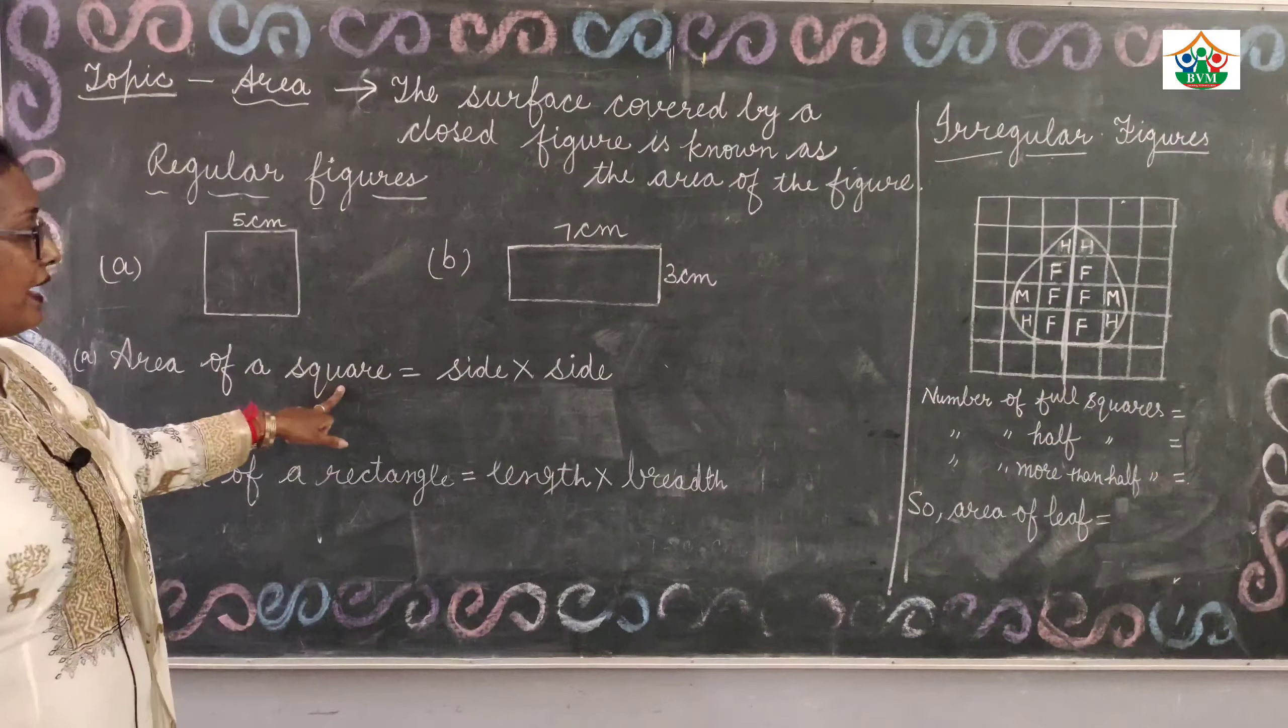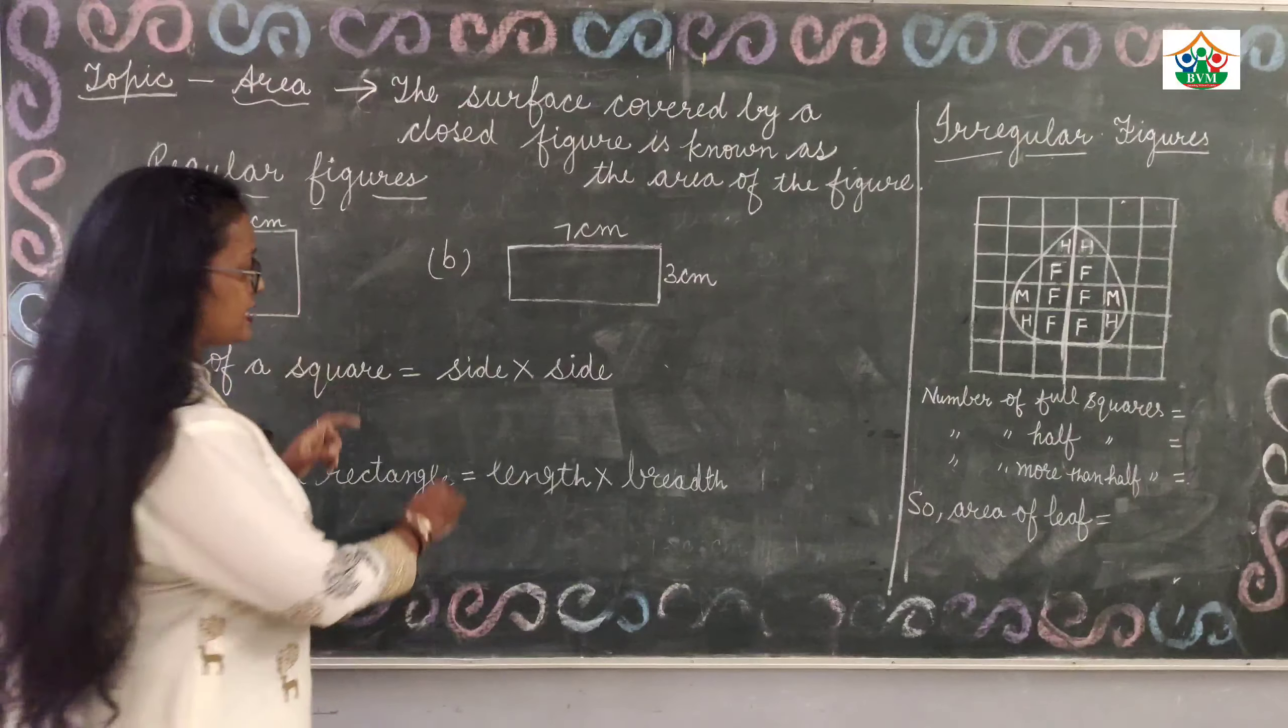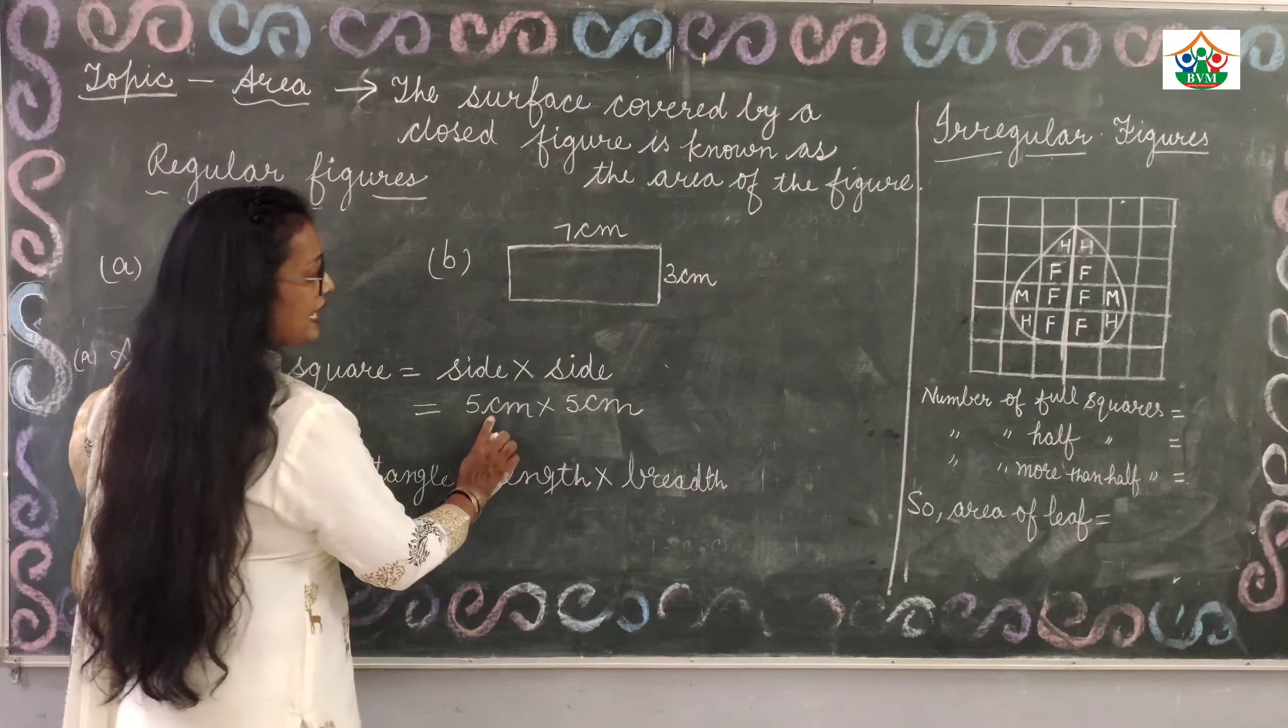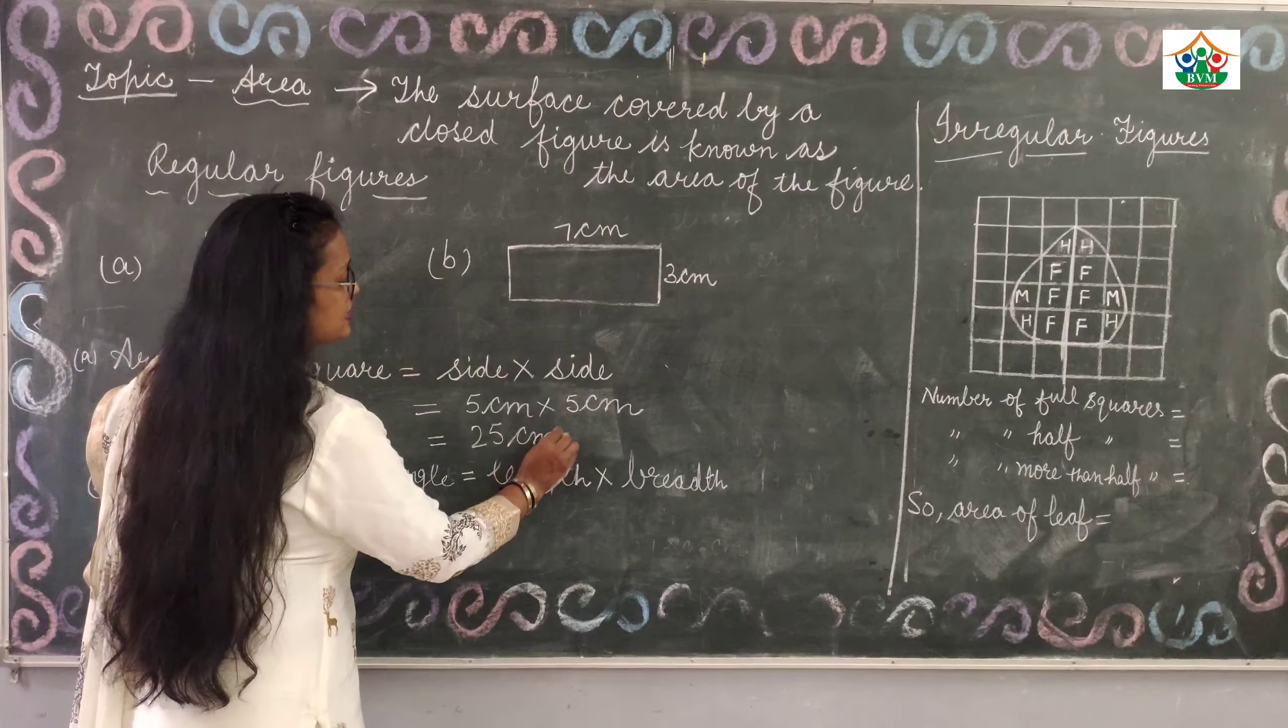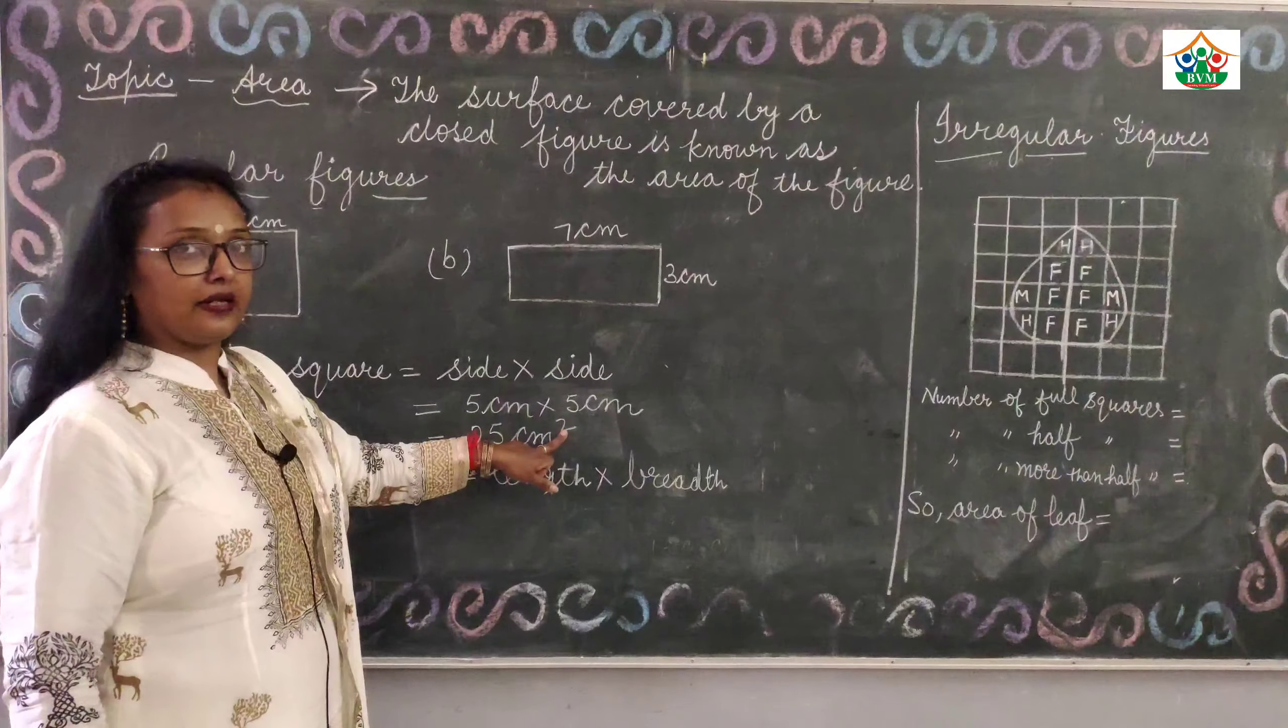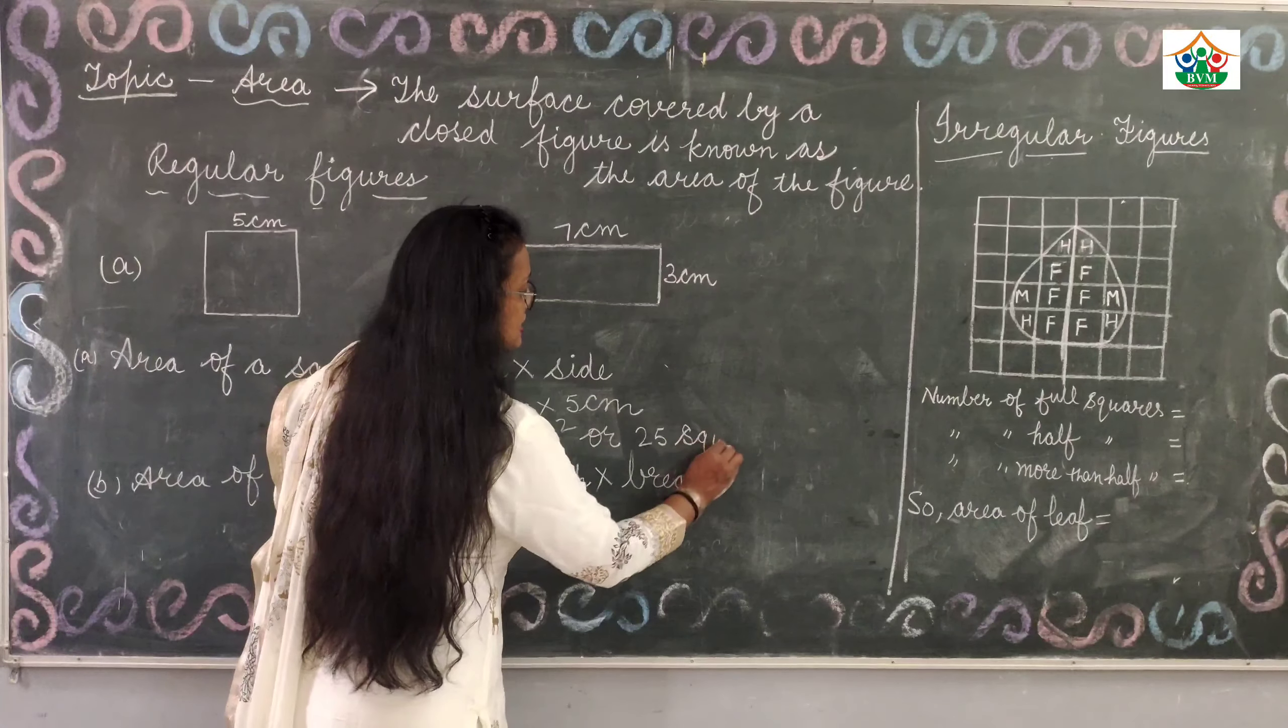Firstly we will find the area of square. Formula of square: area of square is equal to side multiply side. One side is 5 centimeter, then we will multiply it by 5. Side by side, it is equal to 25 centimeter square. Then we will multiply one unit with other unit, it will be square in square unit. We can write it also 25 square centimeter.